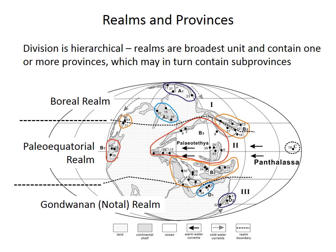The distribution of these faunal provinces, and the reason there are boundaries and divisions between them, relates to factors like climate, ocean circulation, and other related factors. This paleobiogeography can play an important role in reconstructing things like past environments, climate gradients from the equator to the pole, and ocean conditions and circulation.